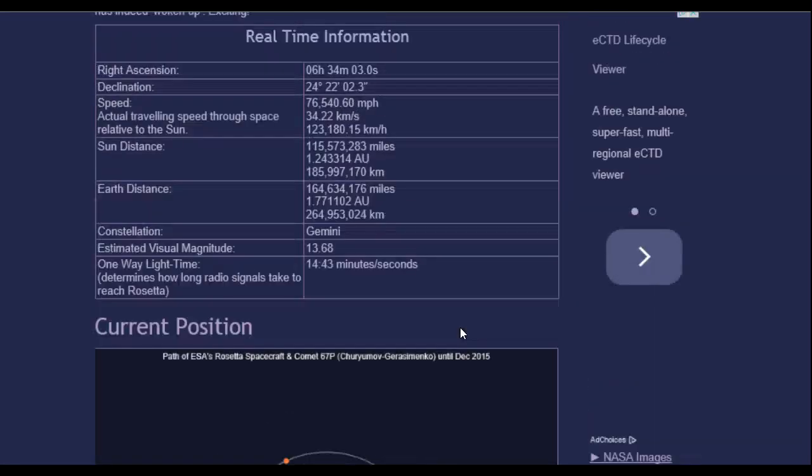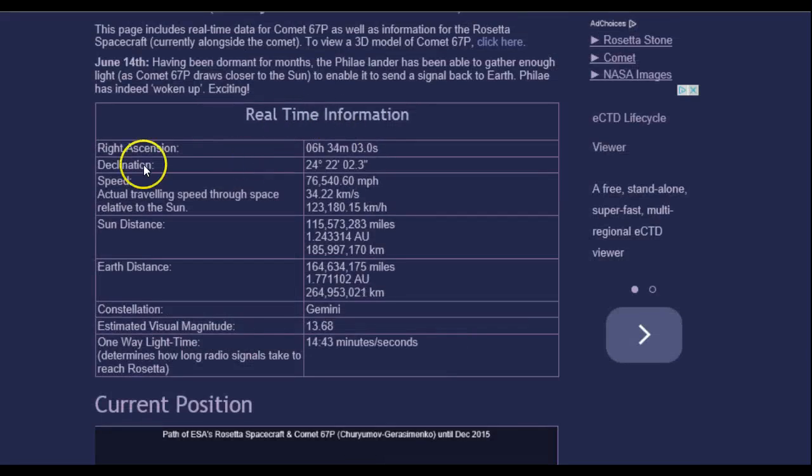What's interesting is, if you look at the real-time information for this comet, the Sun distance in miles, and here's AUs, and here's kilometers. If you watch, the distance from the Sun is increasing, so it's getting further away from the Sun. This measurement will go up, see how it's increasing in kilometers. But the Earth distance is decreasing.